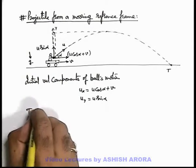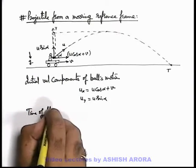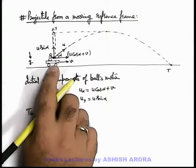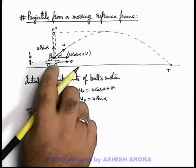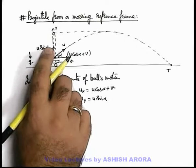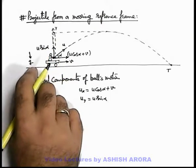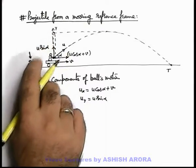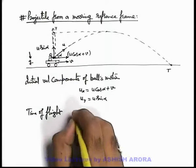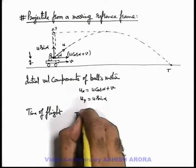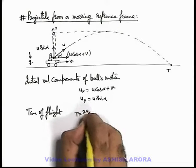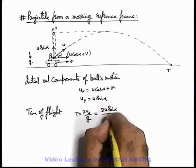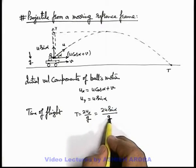Always remember that the time of flight can be calculated from the y direction motion, that is free fall. In this situation the particle was thrown up with velocity u sin alpha and is retarded by g. Time taken to reach up will be u sin alpha by g, and the same time it takes to come down. So time of flight is written as 2 u_y by g, that is 2 u sin alpha by g — it remains the same as that of the normal projectile.